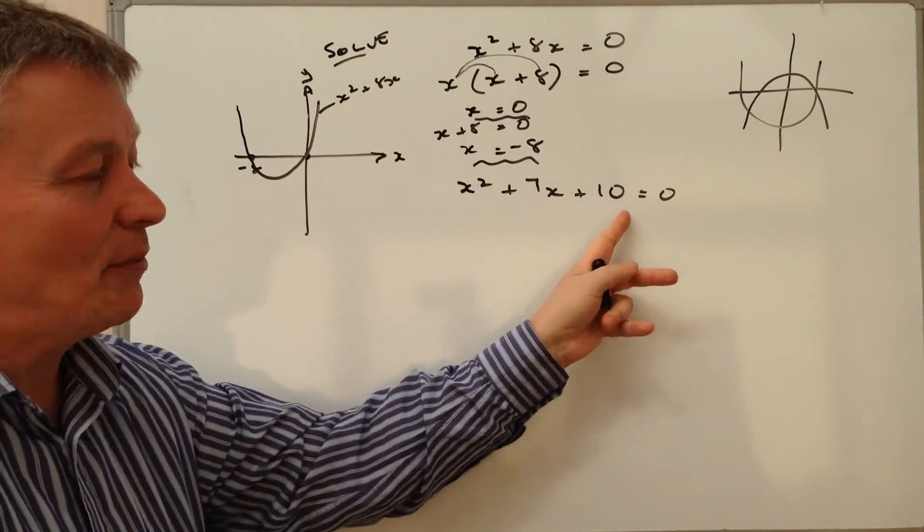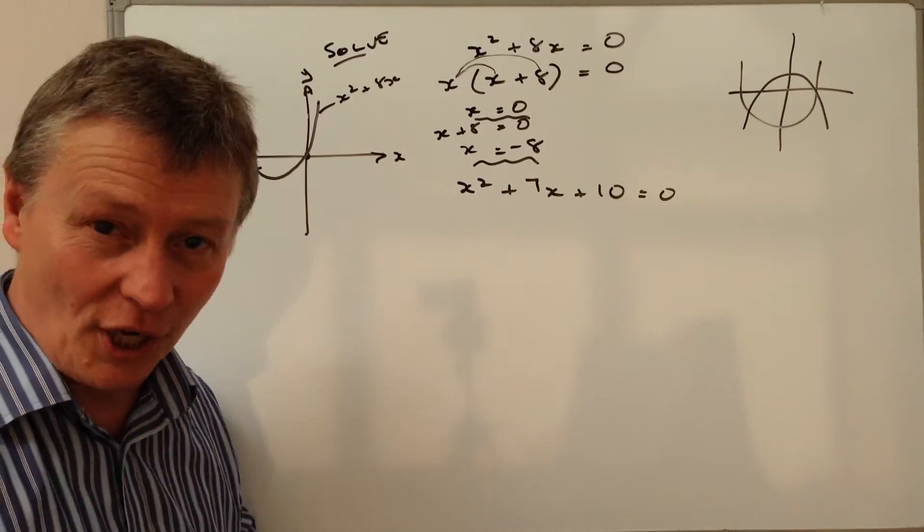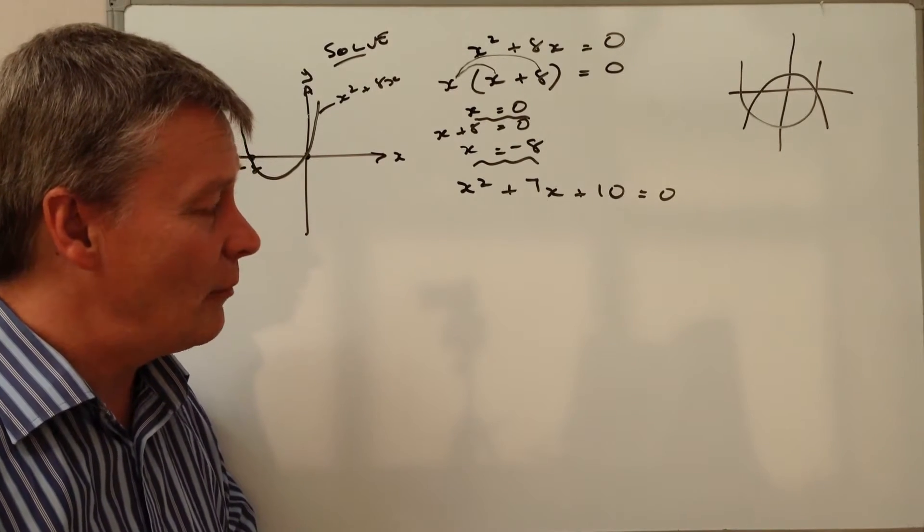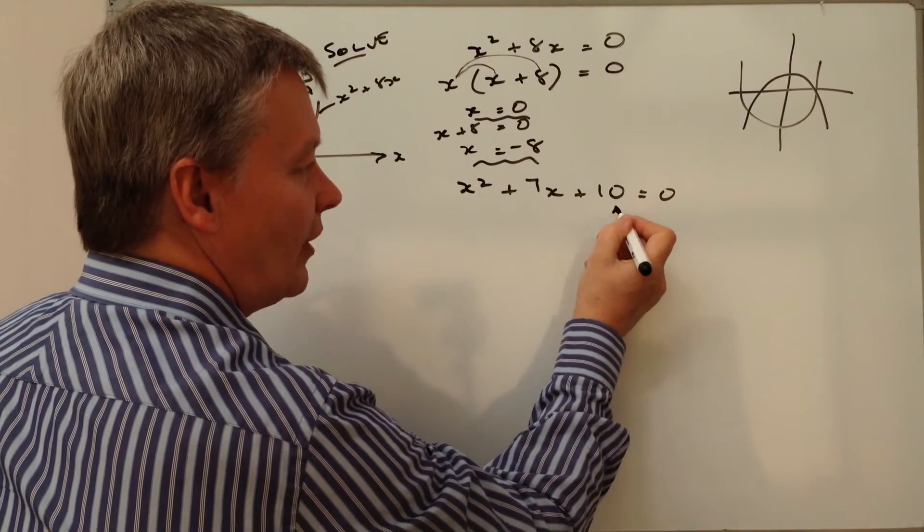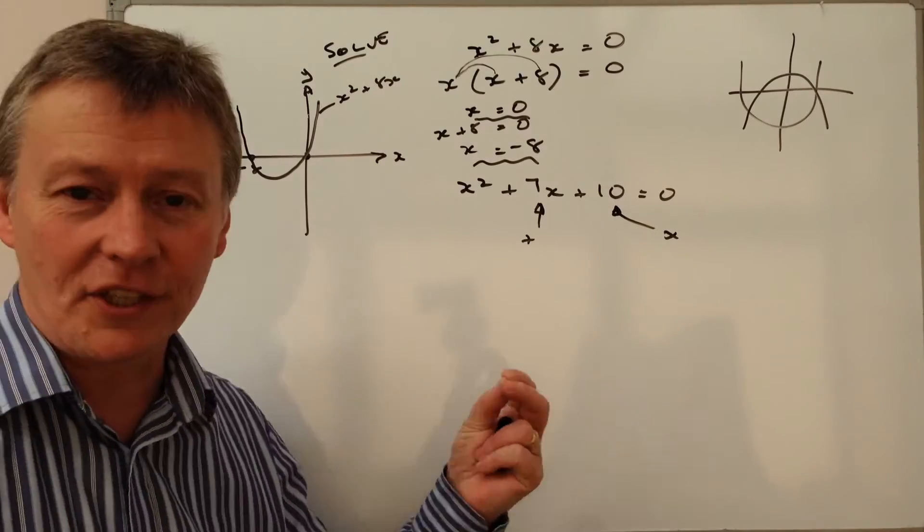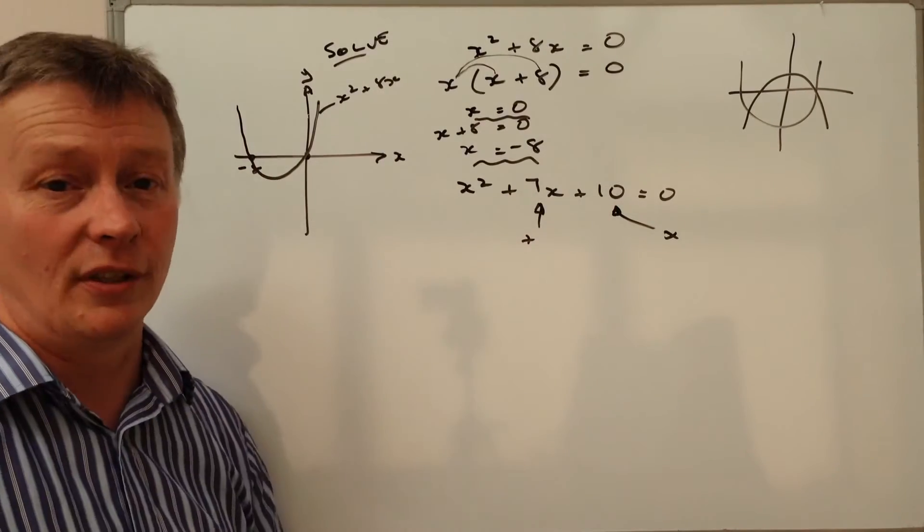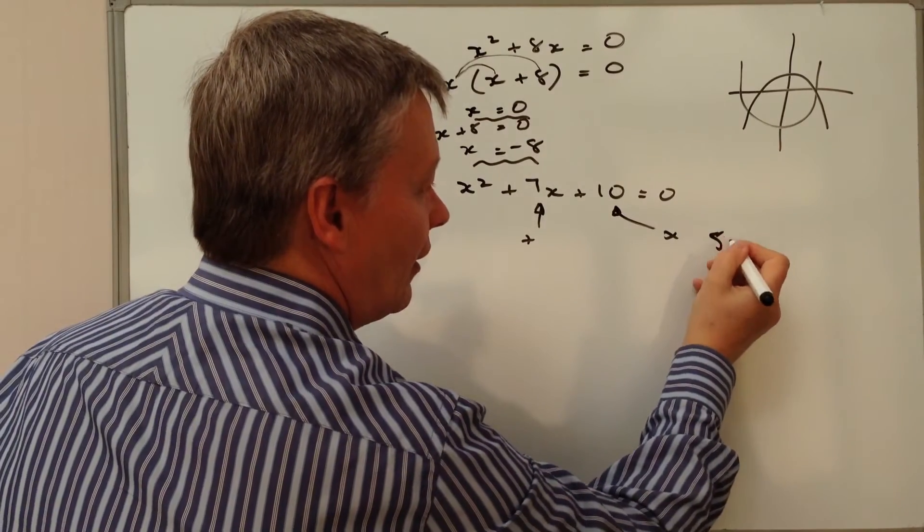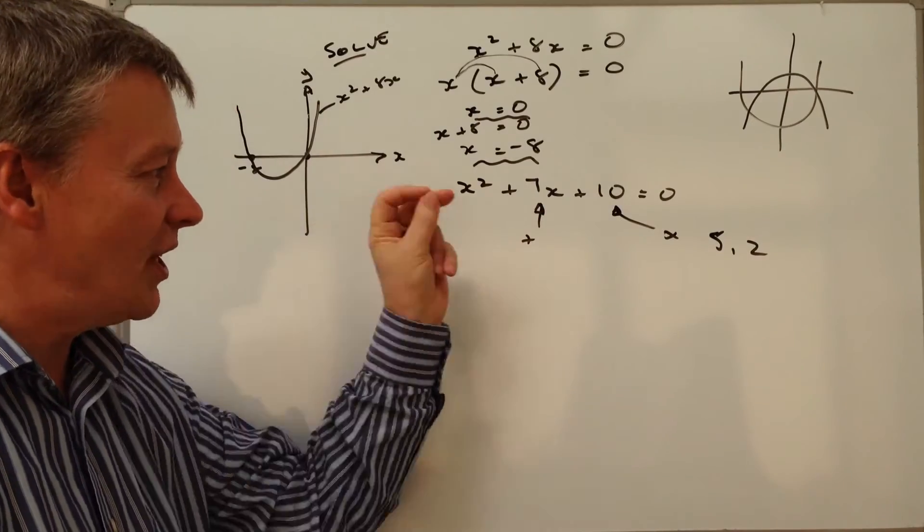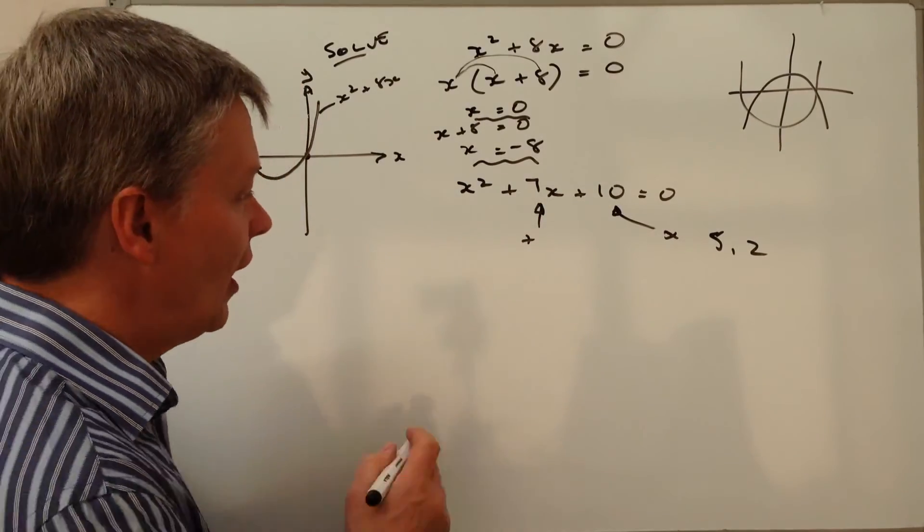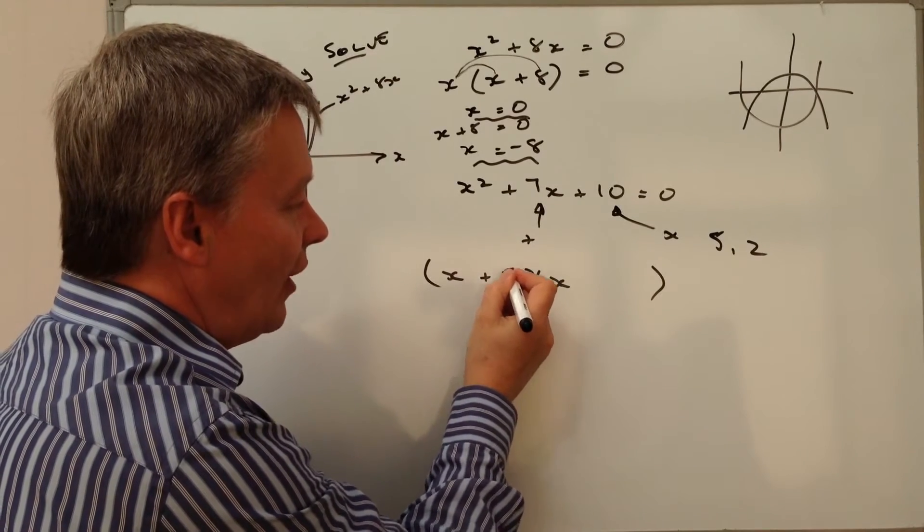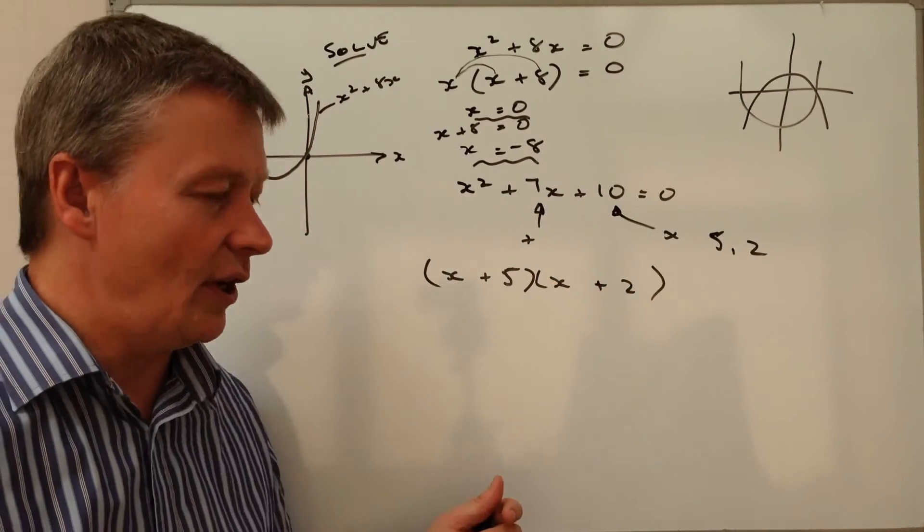That's been a little bit tricky because perhaps you've not come across those before. You might be more familiar with these types of equations where we've got a double bracket. To do those, we've got trial and error on this particular video, where I'm looking at two numbers that when I multiply them together will make 10 and when I add them together will make 7. I guess you can probably think of those: 5 times 2 is 10, and if I add 5 and 2 together I get 7.